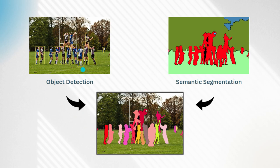Object detection is one of the easier ones. It involves identifying objects within an image and then giving them a bounding box so that they can be located. As you can see here, each of the players on the field are surrounded with a box — that's called a bounding box — and that signifies where the model found that person or the object it's trained to look for.